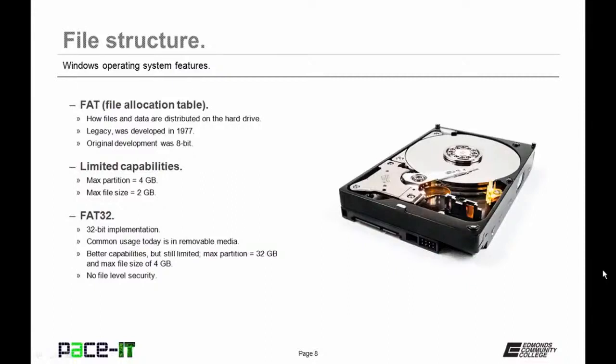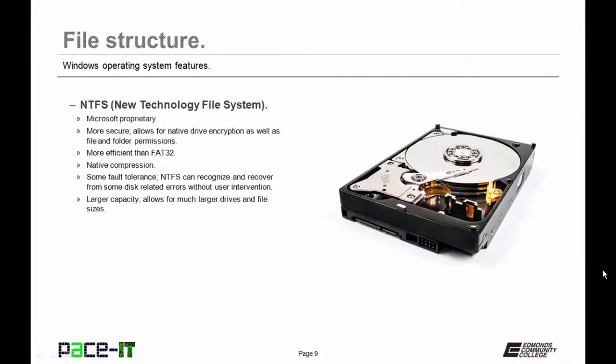Microsoft moved on to NTFS — New Technology File System — which is proprietary to Microsoft. It's more secure, allows for native drive encryption, and both file and folder permissions. It's more efficient than FAT32, supports native compression, has more fault tolerance, recognizes and recovers from some disk errors without user intervention, and allows for larger capacity.